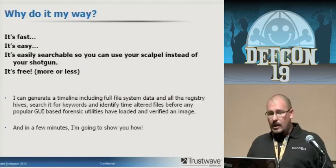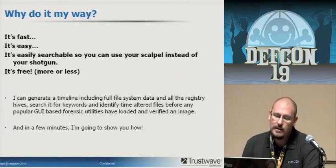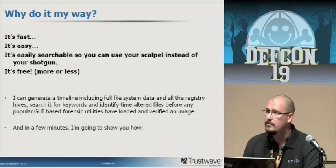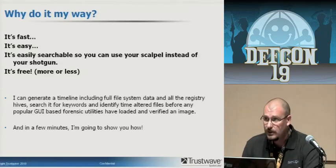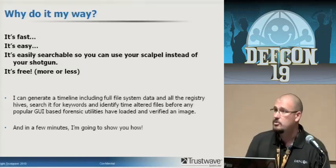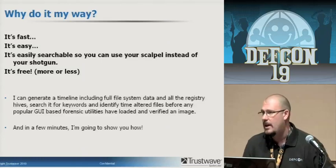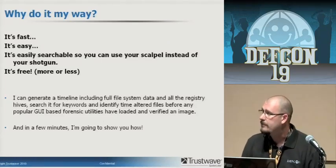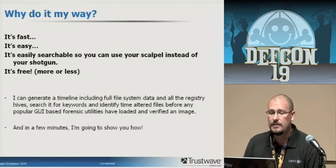So why do it my way? Everybody's seen forensic suites that sort stuff into timelines — it's very limited. My way is fast, super easy, and extremely easy to search, whether you're more comfortable with the command line or find command. Instead of doing traditional shotgun forensics where you're looking for anything bad, you can use your scalpel and go after exactly what you're looking for. And it's free, more or less — there's really only one piece that's not free; the rest is open source. I can generate a timeline including full file system data on all registry hives, search it for keywords, and identify altered files before any GUI-based utilities have even loaded an image.